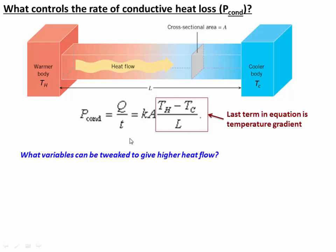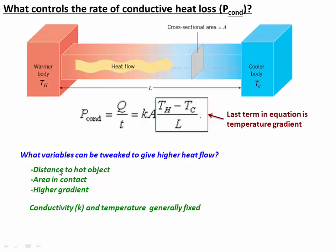This equation gives us a framework to think about how we might get more heat flow out of a system. What could we change to make power P larger? We could move the hot object closer, making L smaller and thus making heat flow bigger. We could increase the area A, which would jack up the heat flow. Or we could make the gradient bigger — making the hot object minus cold object temperature difference larger. These are the key things that govern the heat flux and our ability to make geothermal energy.